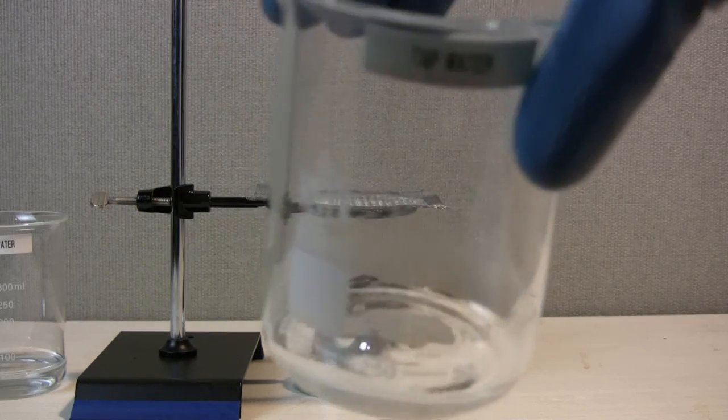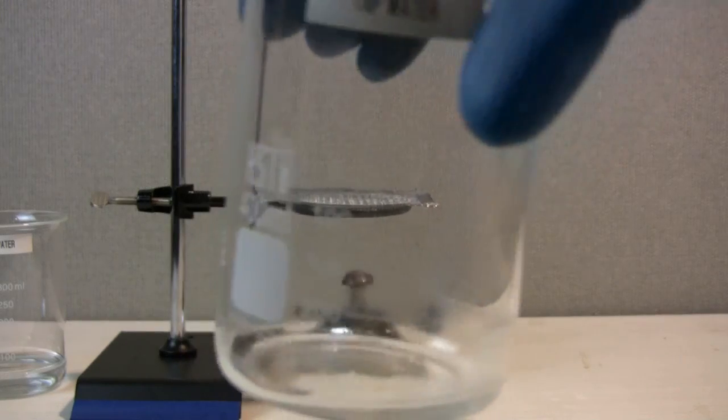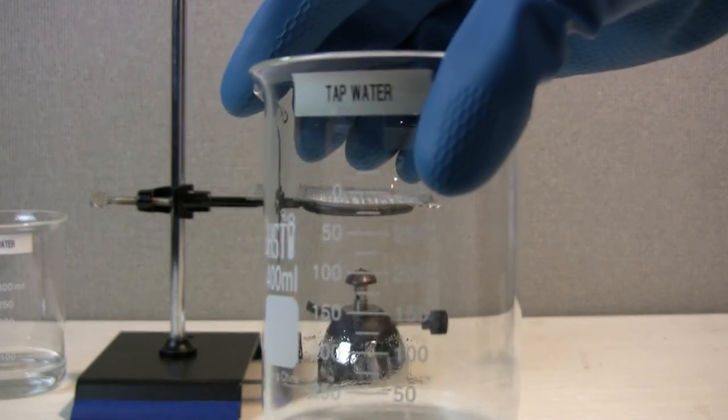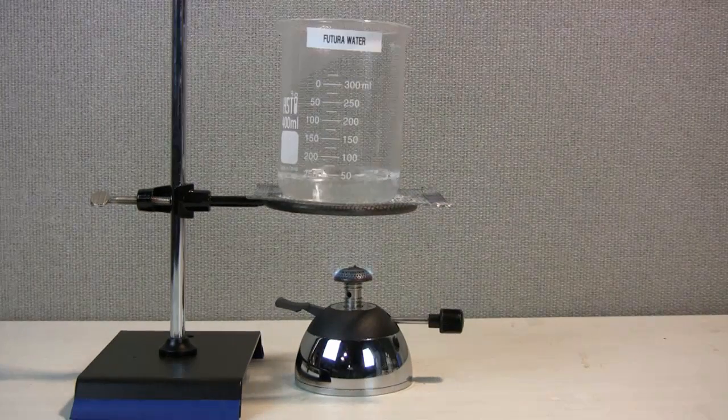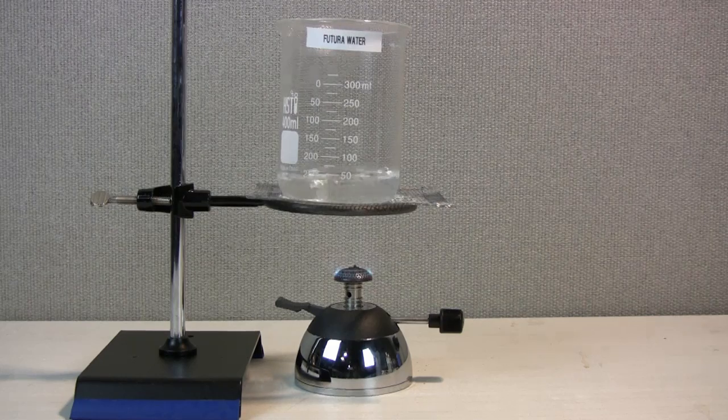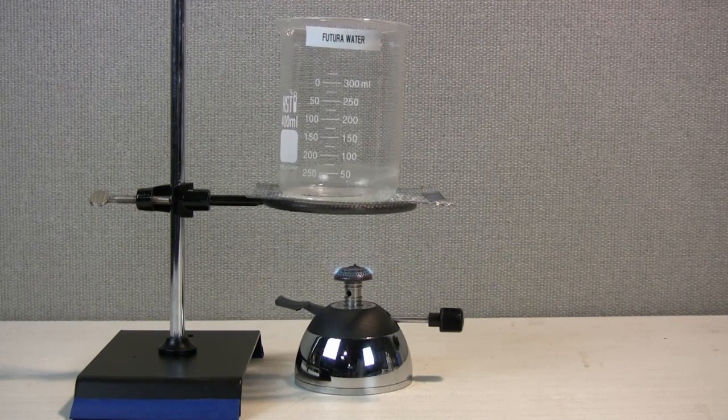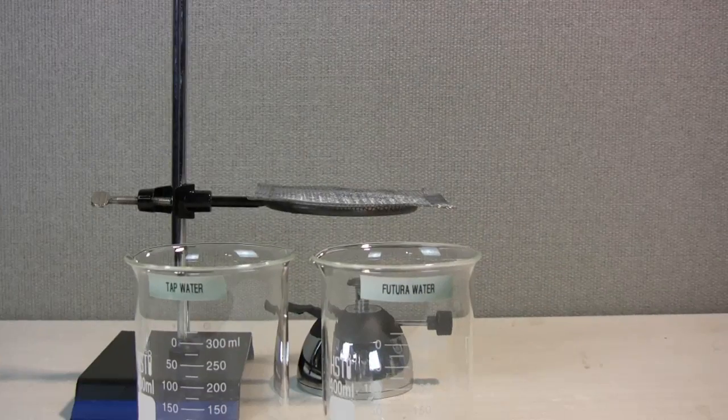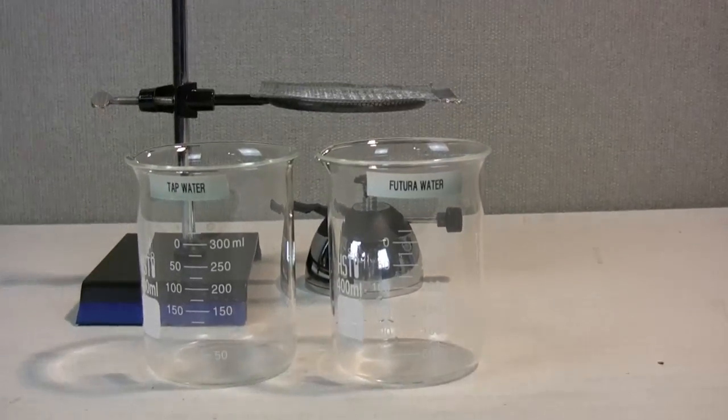The reason we swirl and discard the water is to replicate the real-life conditions in water pipes and appliances where water is not stagnant but flows out on a regular basis to be replaced by new water. Both beakers are set aside for 10 minutes to cool down and dry.